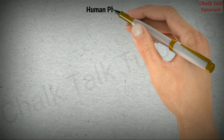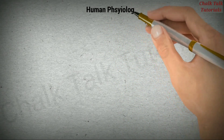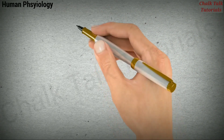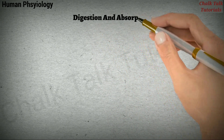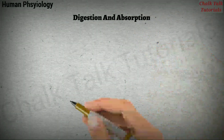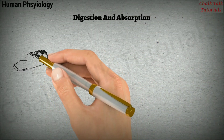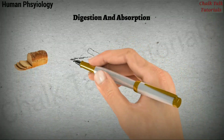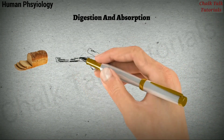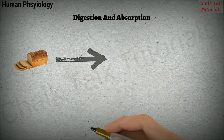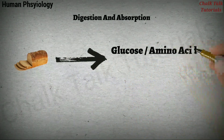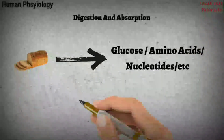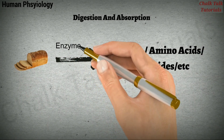Hello everyone, welcome to Chalk Talk Tutorials. In this video we will learn about the process of digestion. Digestion is the breakdown of complex food substances into simple molecules like glucose, amino acids, and nucleotides, and these reactions are catalyzed by various enzymes involved in the process of digestion.